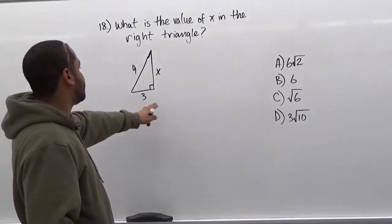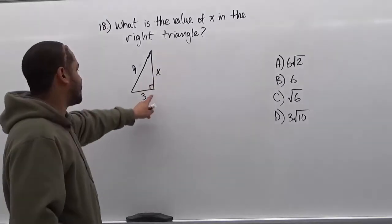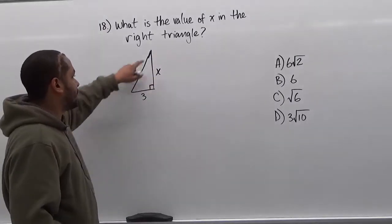Here we see the right triangle, where x is one of the legs and 3 is the other leg, and the hypotenuse is 9.